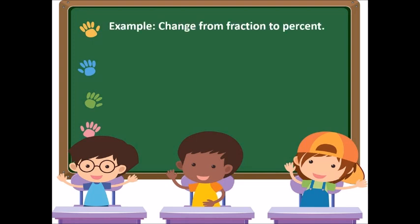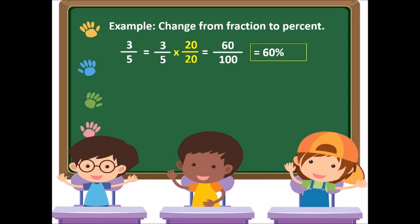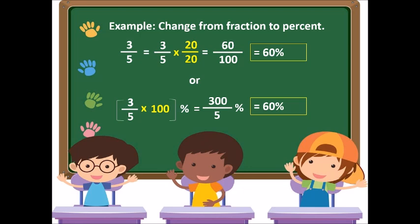Another example: change 3 over 5 from fraction to percent. We multiply by 20 over 20 to get 60 over 100, so that's 60%. Alternatively, 3 over 5 times 100 equals 300 over 5. 300 divided by 5 is 60, so the answer is 60%.